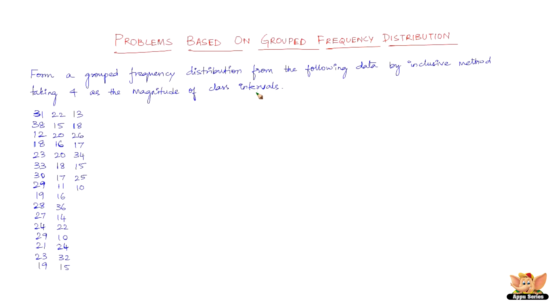The two important things to note here are we need to solve this by inclusive method and taking 4 as the magnitude of class intervals, as opposed to taking exclusive method and 4 as the magnitude of class interval in the previous video.